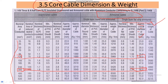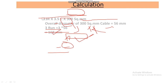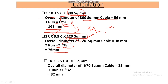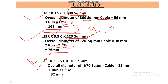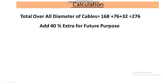Similarly, for one run of 3.5-core 70mm² cable, from the cable catalog the diameter for 70mm² is 32mm. So the overall diameter for one run is 32mm. Now summing all the diameters: 168mm + 76mm + 32mm = 276mm total overall diameter.